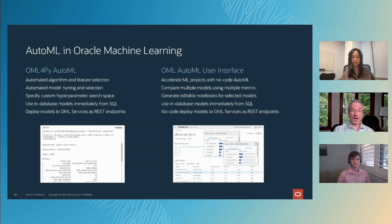Users can score data for real-time use cases by deploying them to OML Services with REST endpoints. Switching to the AutoML user interface, this accelerates projects with AutoML from a no-code user interface, so non-experts and non-coders can easily build models. It also supports data scientists' productivity to quickly see which algorithms have the most promise given the data.